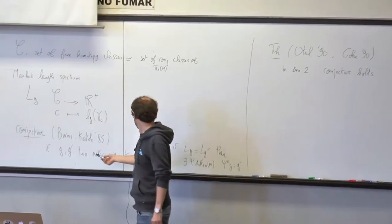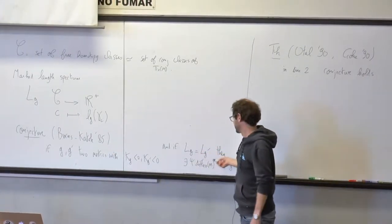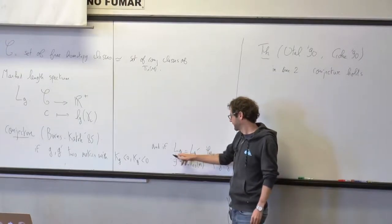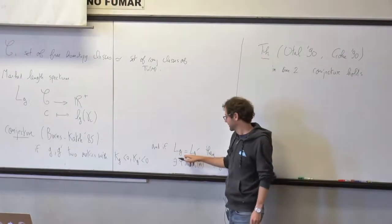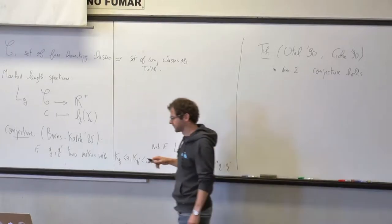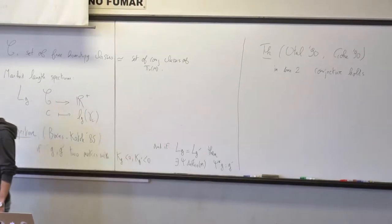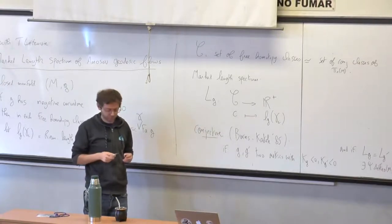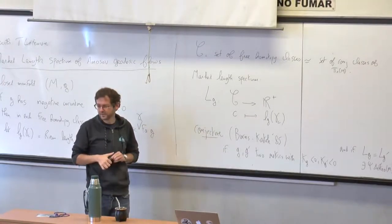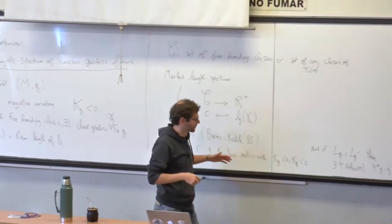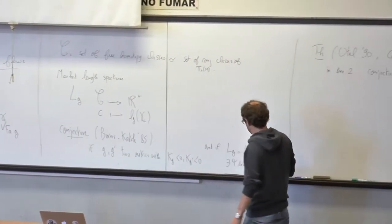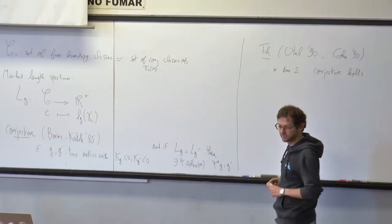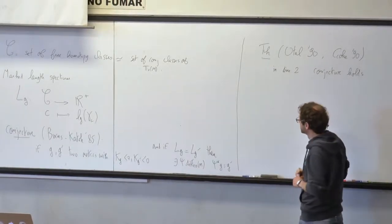It is also well known that having the same Marked Length Spectrum is equivalent to saying that the two geodesic flows are conjugate. So you can also view this question as: if you have two geodesic flows which are conjugate, is the conjugacy actually coming from an isometry? This is a sort of rigidity of conjugacy of geodesic flows in negative curvature.